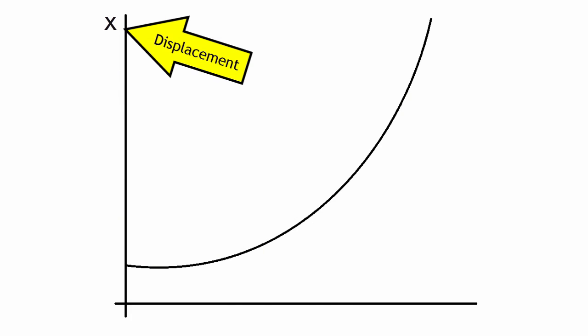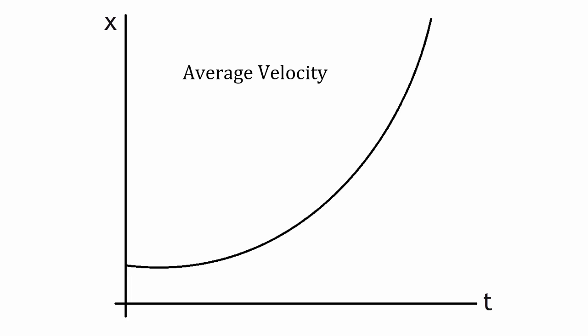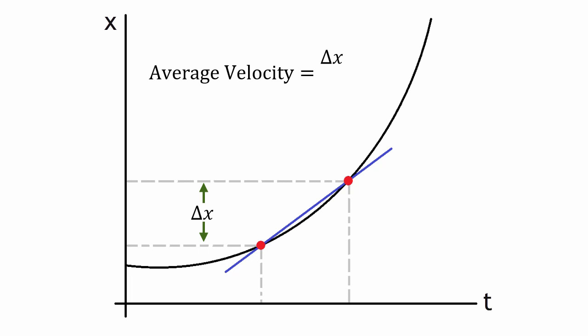Let's say I have a graph which shows the displacement of the ball with respect to time. Without using calculus, I could find the average velocity over a certain period of time. If I want to know the average velocity between two periods of time, I can just find the gradient of that line — which equals rise over run, or the change in displacement divided by the change in time.